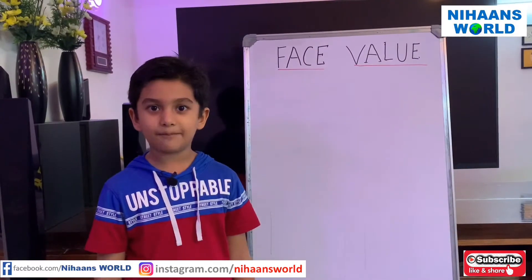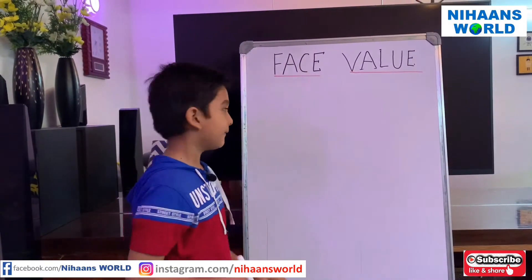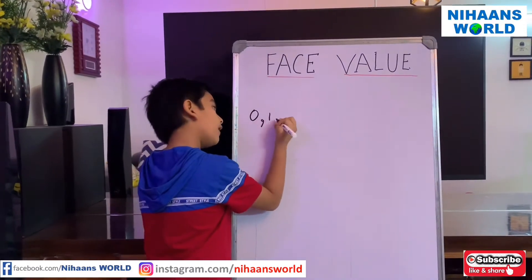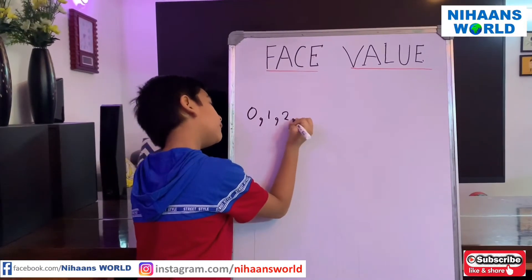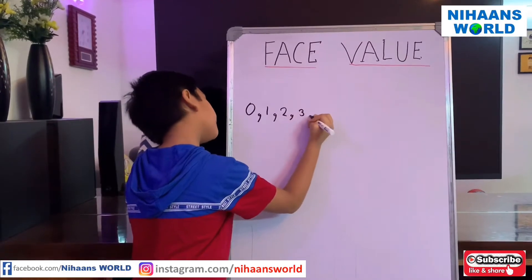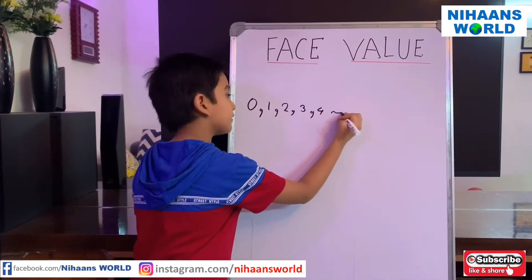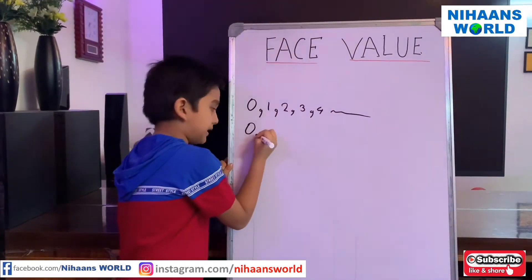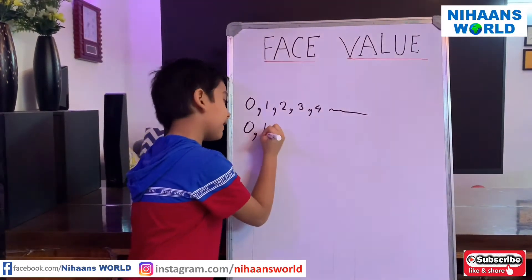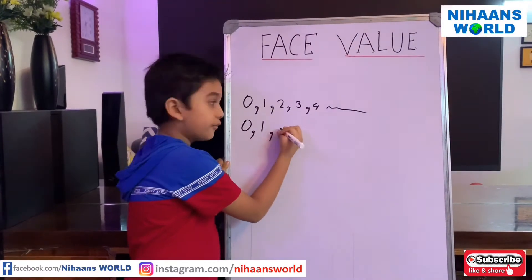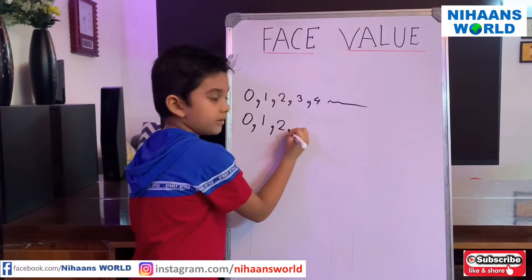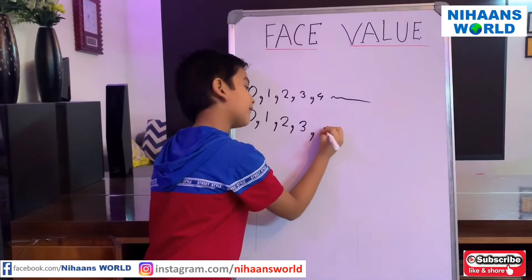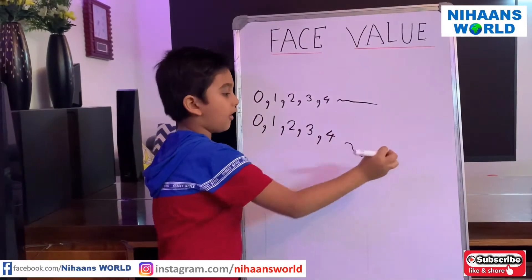Let us take the example of face value. The digits are 0, 1, 2, 3, 4 and so on. 0's face value is 0, 1's face value is 1, 2's face value is 2, 3's face value is 3, and 4's face value is 4 and so on.